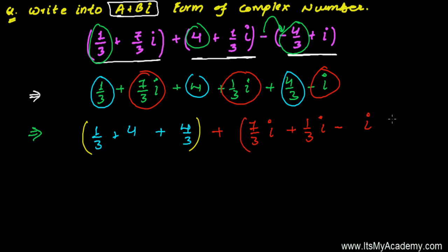We have 1/3 and 4/3, so the denominator is 3. I'm multiplying by 3 and dividing by 3 so I can take the LCM. The LCM is 3, giving us 1 + 12 + 4 in the numerator.